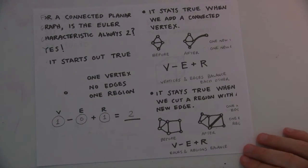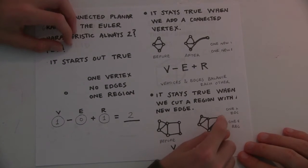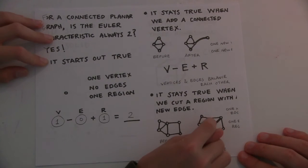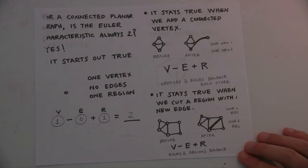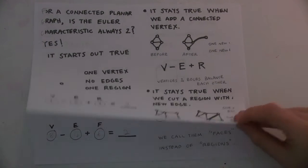So you'd still be able to get 2. And it stays true when we cut a region with a new edge. So if you added one edge here and divided one region into two regions, you'd be adding one region and an edge. One of these things you're subtracting away, and one of these things you're adding in. So those would cancel.